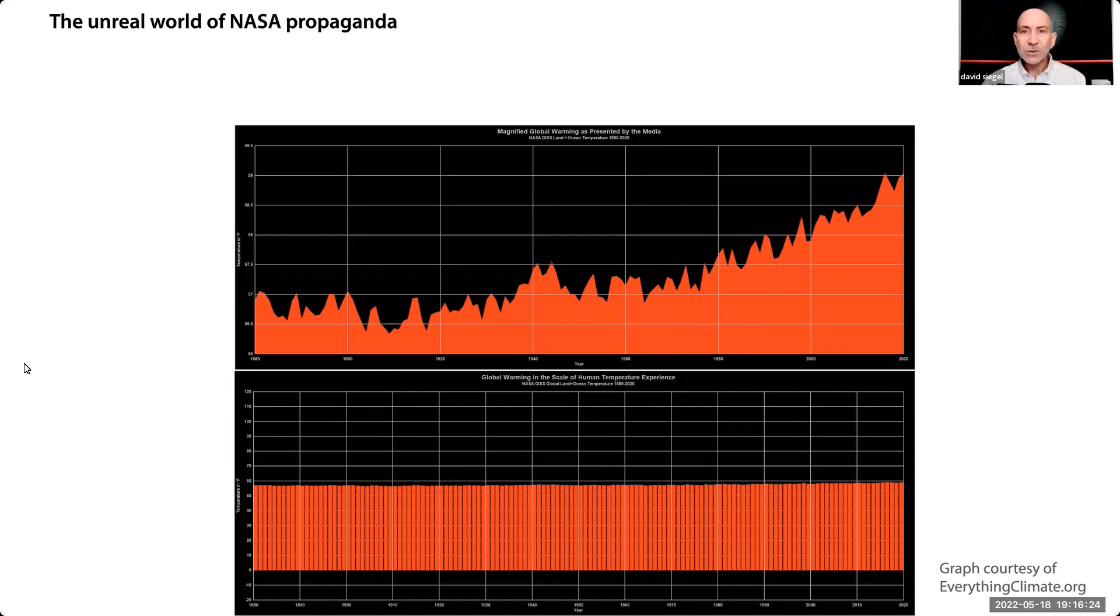This graph shows the same thing every other graph shows, about 0.8 degrees Celsius of warming per century for the last 150 years. Media companies prefer the top chart. By combining it with scary headlines and images of disasters, they get more traffic and sell more advertising.